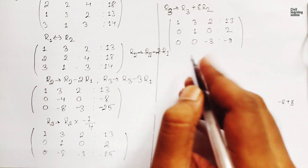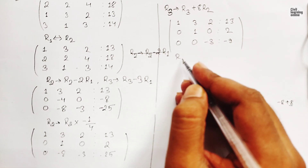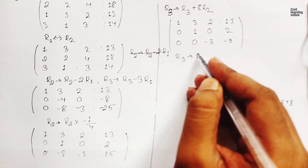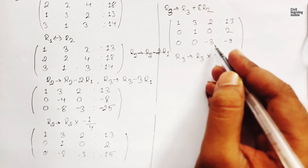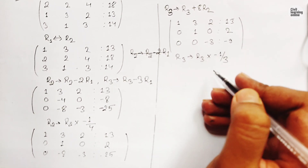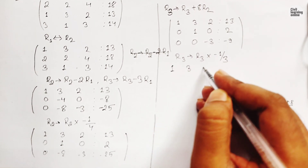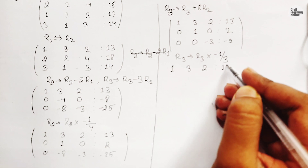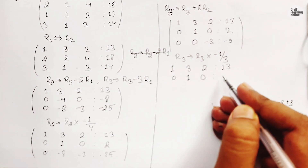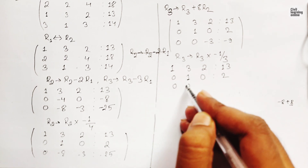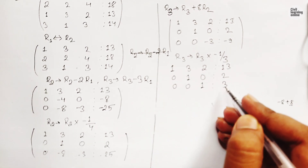Now we perform one more operation to make the diagonal element of R3 unity: R3 → R3 × (−1/3). The final upper triangular augmented matrix is: Row 1: 1, 3, 2 | 13; Row 2: 0, 1, 0 | 2; Row 3: 0, 0, 1 | 3, since −9 ÷ −3 = 3.